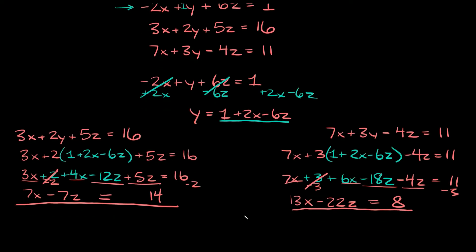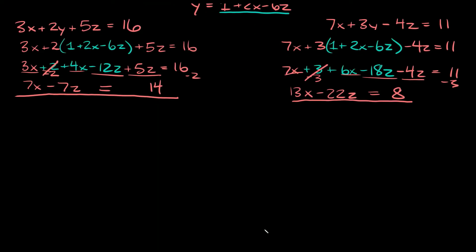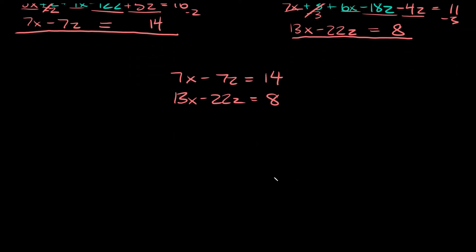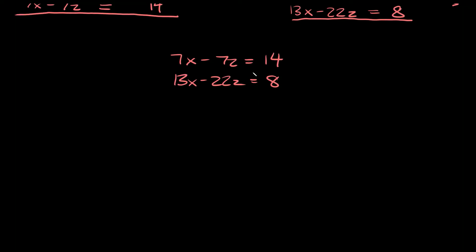Now this should look more familiar, because we just have two equations with two unknowns: 7x minus 7z equals 14, and 13x minus 22z equals 8. So we basically just have to do the first step one more time — pick one of the equations and solve for one of the variables. Let's use the first one since it looks a little easier to work with.